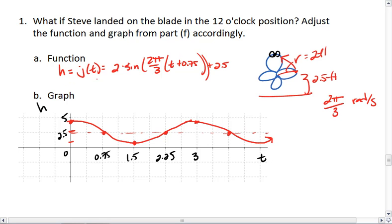Or we can write this as 2 sine, and we can distribute the 2π/3, which gives us 2π/3t plus π/2, because essentially Steve has also jumped ahead π/2 radians.